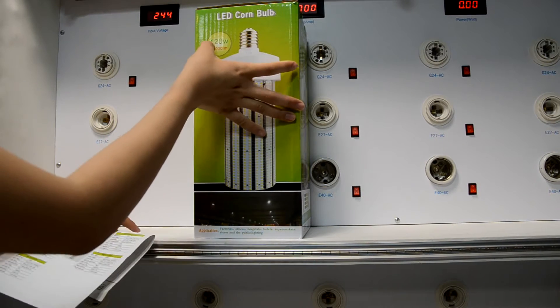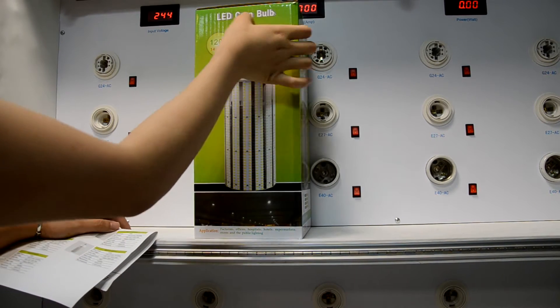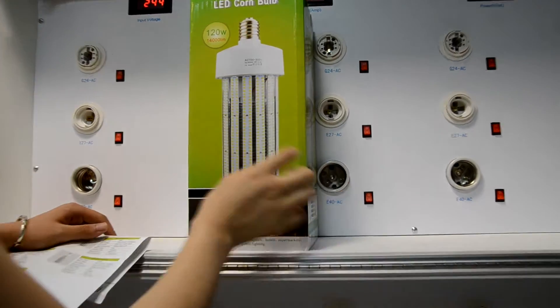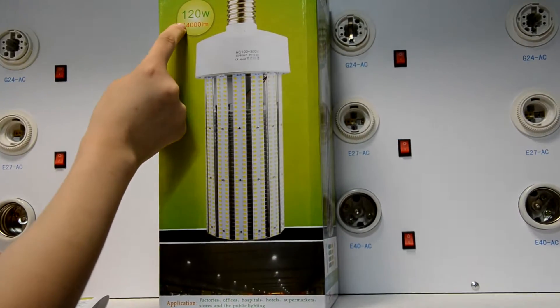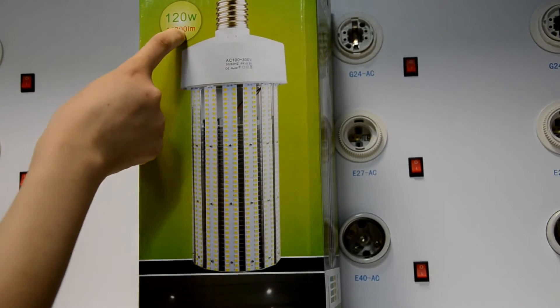I will introduce the 120-watt LED corn bulb. You can see here it is 14,000 lumens.